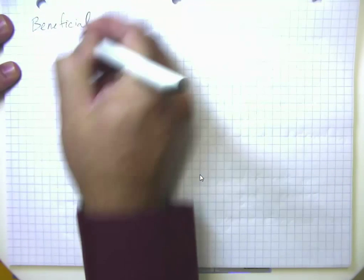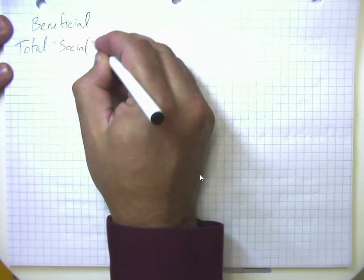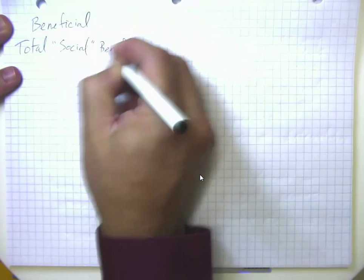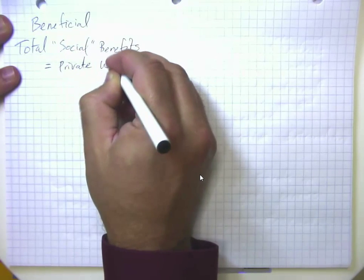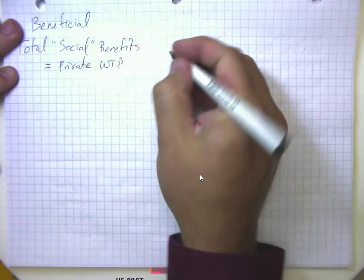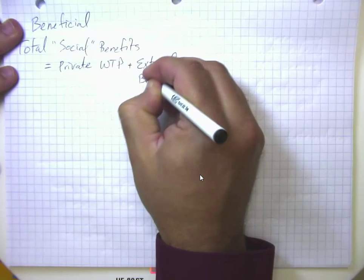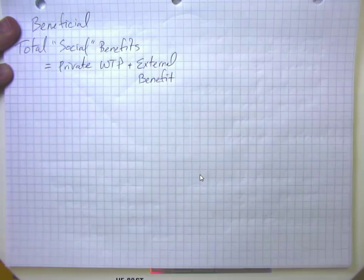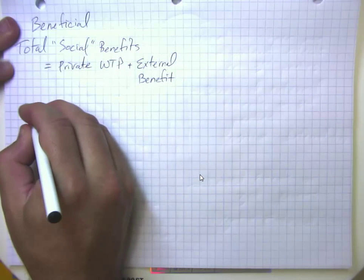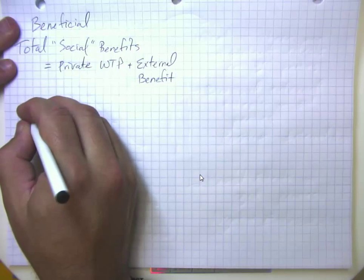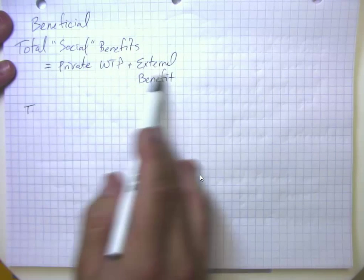Then the total or social benefits to a transaction equals the private or internal willingness to pay for the actual buyer or consumer, plus the external benefit. And sometimes when we want to write this as an equation, we want to think about this often in what we call marginal terms, incremental terms. So this would be the total benefits of all the consumption equals the private benefits of all the consumption, plus the external benefits of all the consumption.